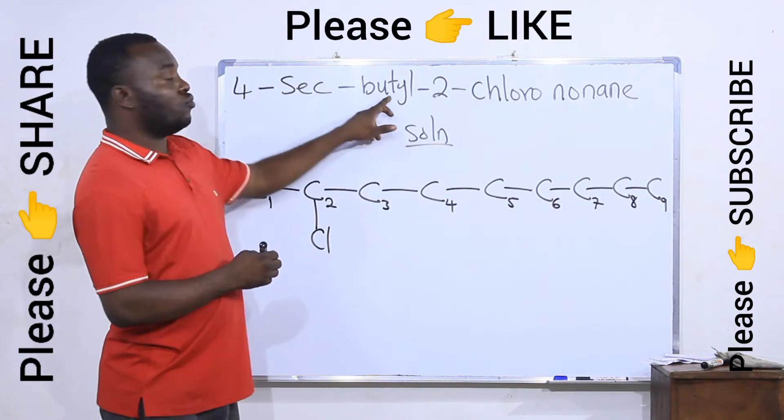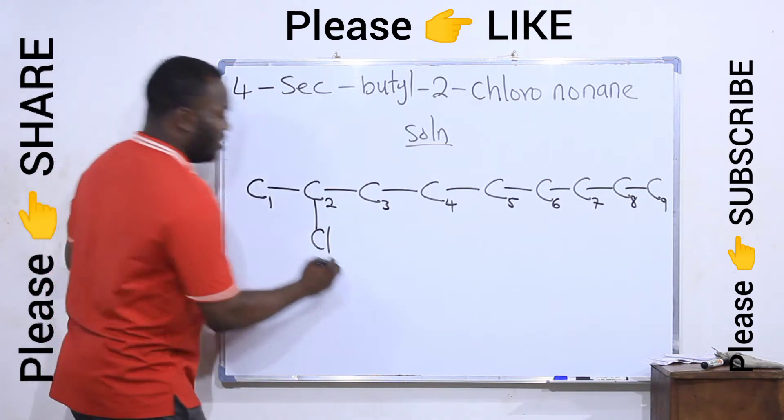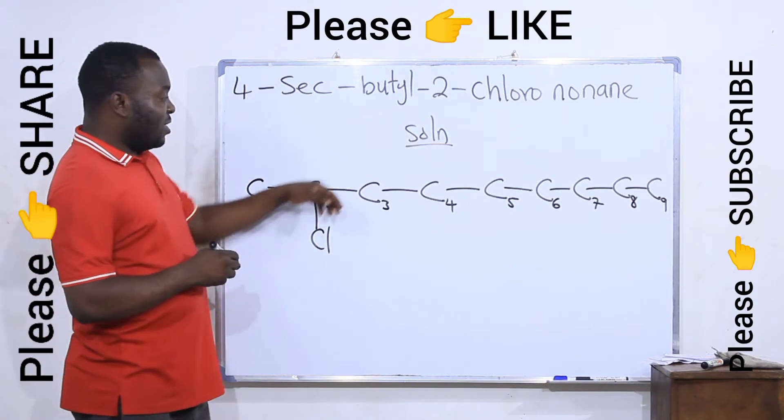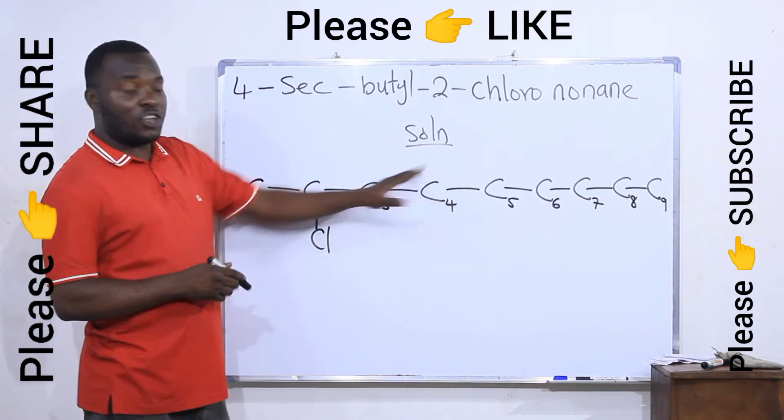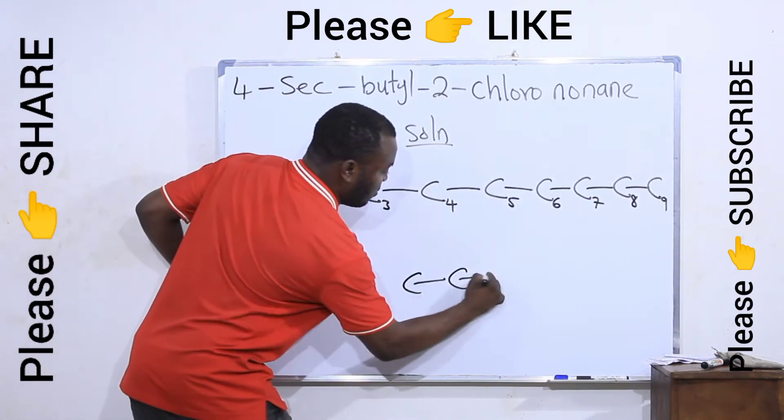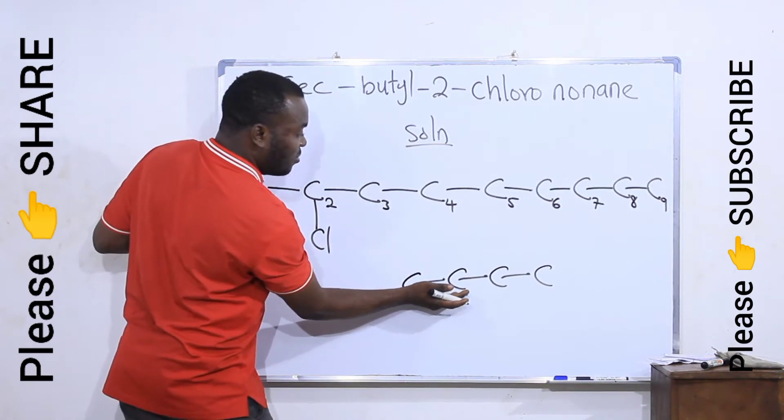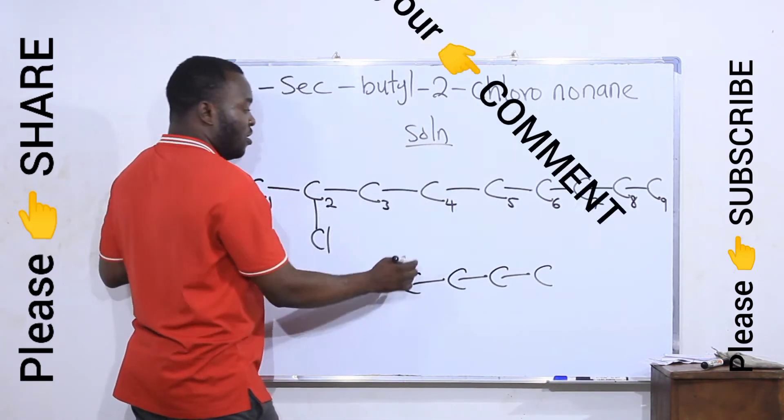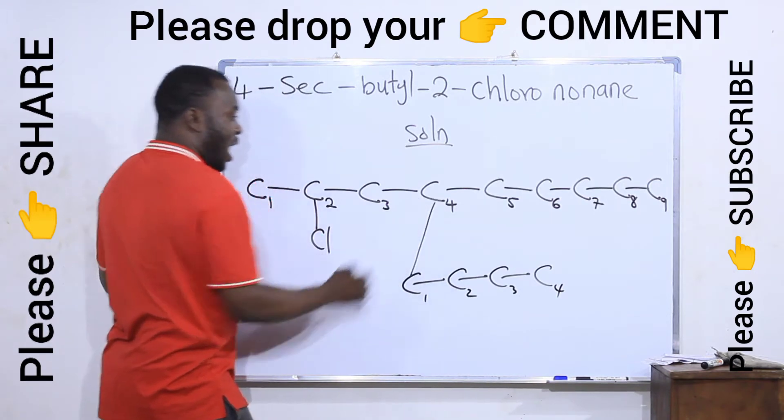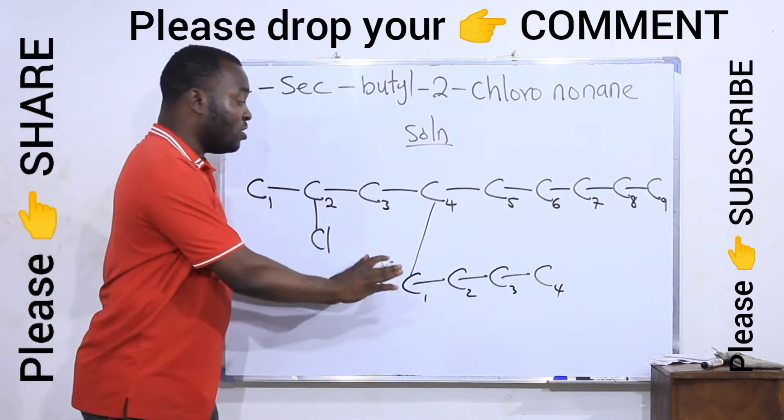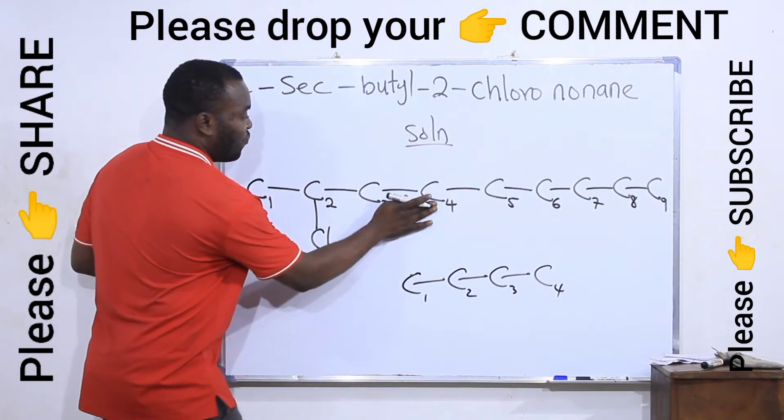Now go to position four and put sec-butyl. Now a sec-butyl, which is actually secondary butyl, is a butyl in which the second carbon is the one used to connect to the longest chain. Look at this. This is butyl: one, two, three, four. So if I connect this butyl to the longest chain from the first carbon, this is the first carbon. If I connect from here, I will not call it sec-butyl.